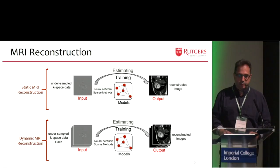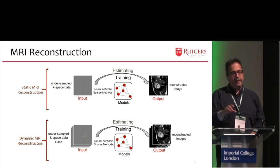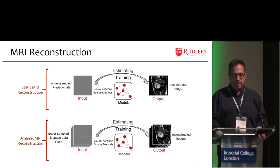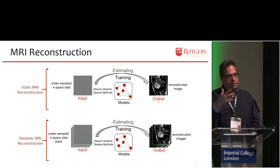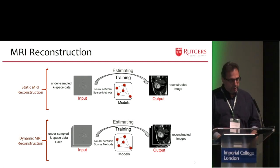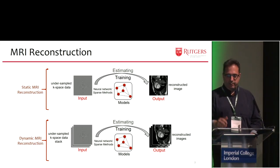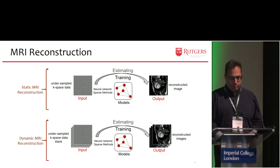Let me start with an introduction. Static MRI was the previous talk. Typically, you have an under-sampled k-space these days and there are many algorithms to do that, either using neural nets or sparse methods. Back in 2010, we got the best paper award for using sparse methods. But as you know, there are convex methods, nonlinear, and you use methods like FISTA. You can estimate the reconstructed image. And if you have dynamic MRI, then you use lots of images over time and use similar methods to do reconstruction.